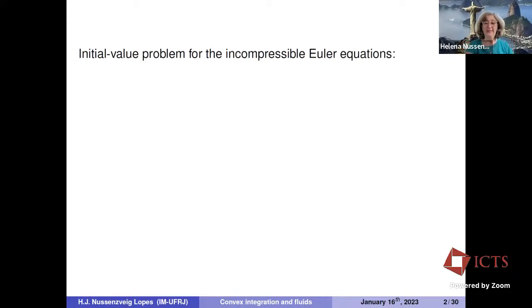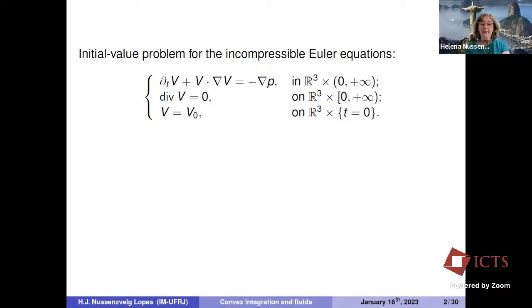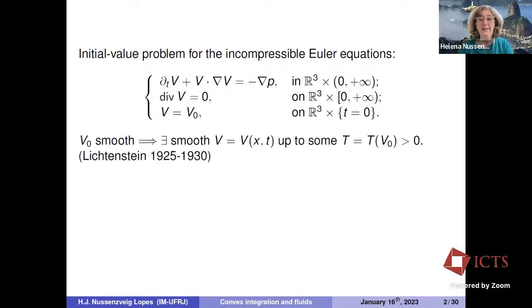I'm going to start with the initial value problem, just setting some notation. The initial value problem for the incompressible Euler equations is: d/dt of v plus v dot grad v equals minus gradient of pressure, divergence v equals zero, with initial data v equals v-naught. This is set in R³ cross time. If v-naught is smooth, we have the existence of a smooth vector field up to some time depending on the initial data. The earliest version of this is due to Lichtenstein, back from around 1930.